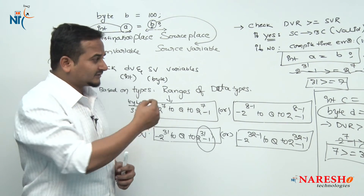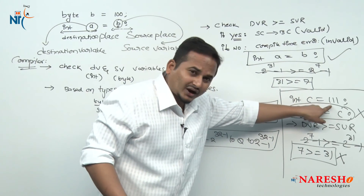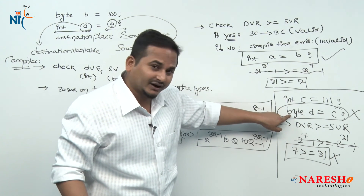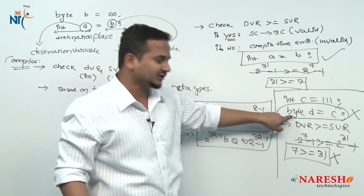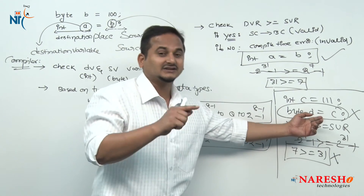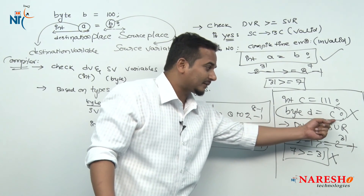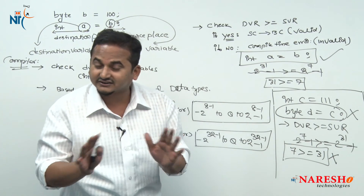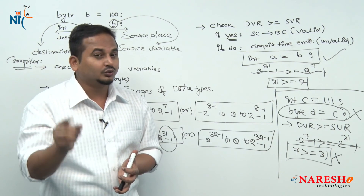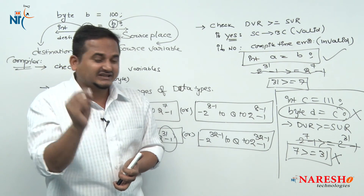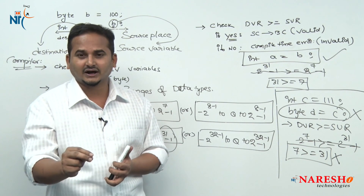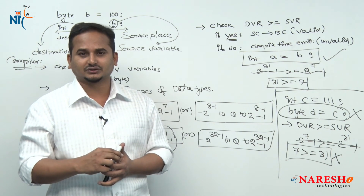Observe here — the value is 111, which is totally compatible with byte; the value is within the range of byte. But why does the compiler give a compile time error? The reason is: whenever we assign a value to a variable with the help of another variable, the compiler does not concentrate on the value — it only concentrates on the ranges. How we can overcome this problem, we will see in the next video. I hope you enjoy this video, thank you.